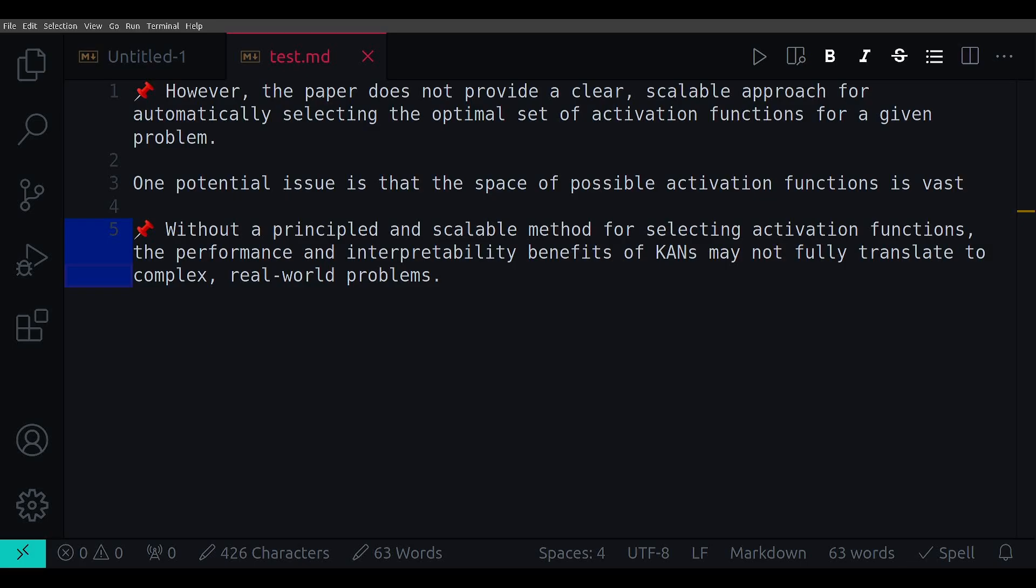Now I want to talk about some of the possible areas where more clarity is needed from the paper. The paper proposes using learnable spline activation functions, which are parameterized by a set of trainable control points. During training, the control points are optimized to fit the target function. This allows the network to learn complex nonlinear relationships. However, the paper does not provide a clear, scalable approach for automatically selecting the optimal set of activation functions for a given problem. Recursively selecting functions during training could be challenging, especially for deep CANs with many layers and nodes. One potential issue is that the space of possible activation functions is vast, and searching through all combinations of splines and other nonlinear functions may not be computationally feasible for large-scale problems. The paper does not address this combinatorial explosion.